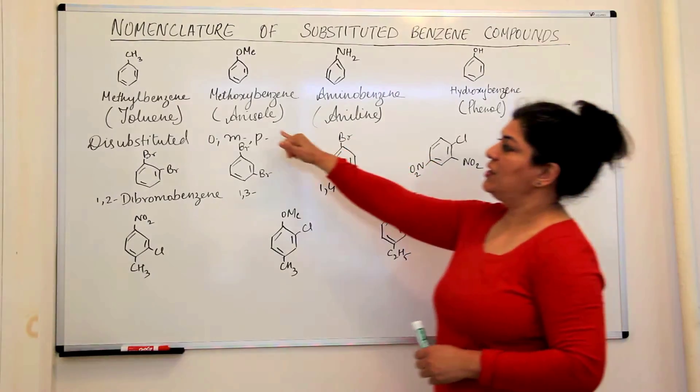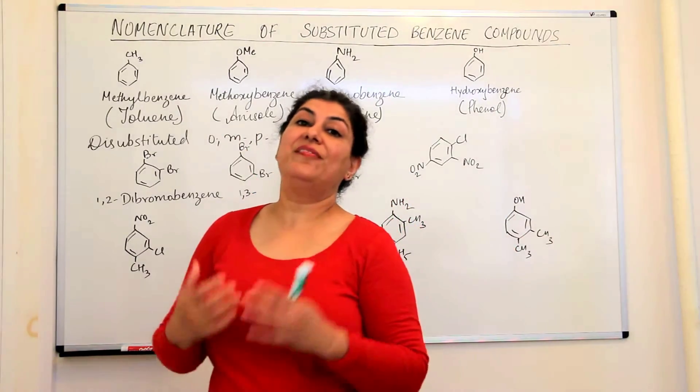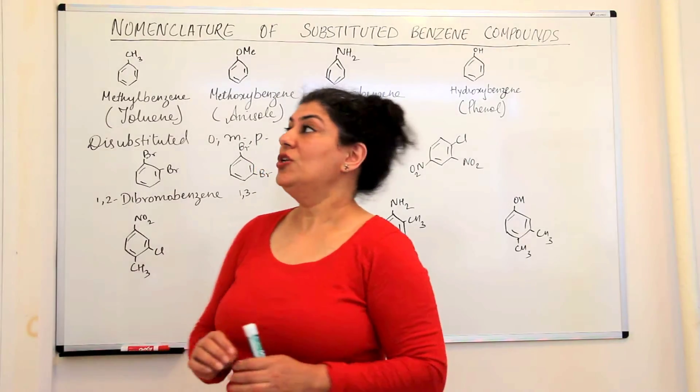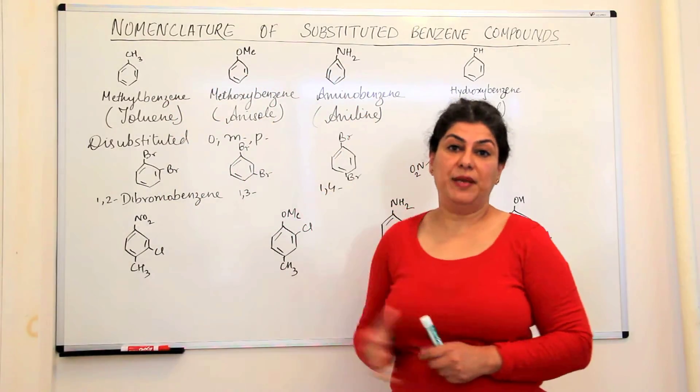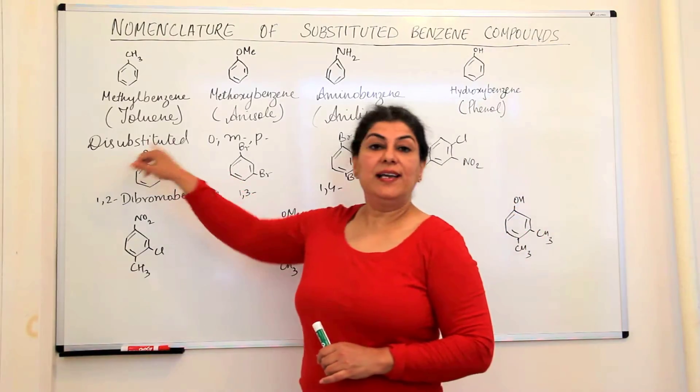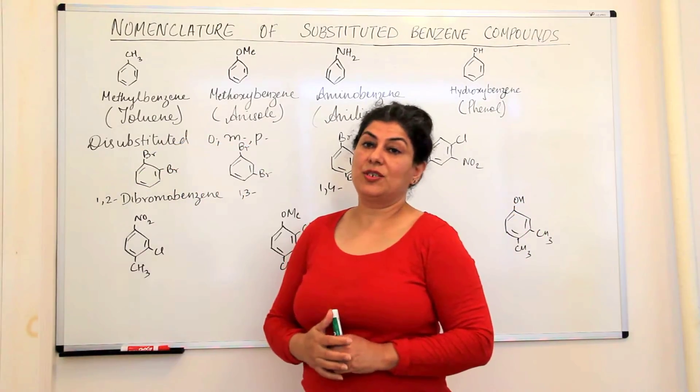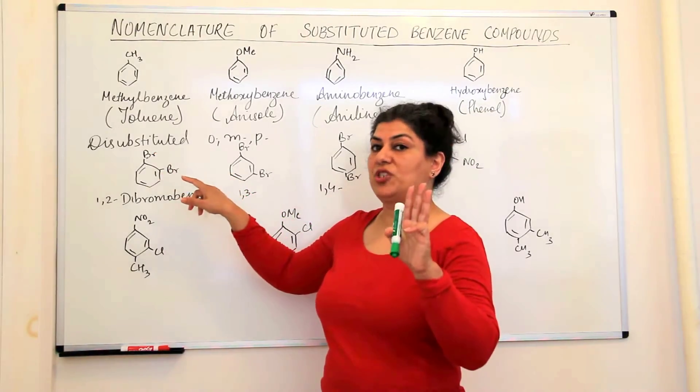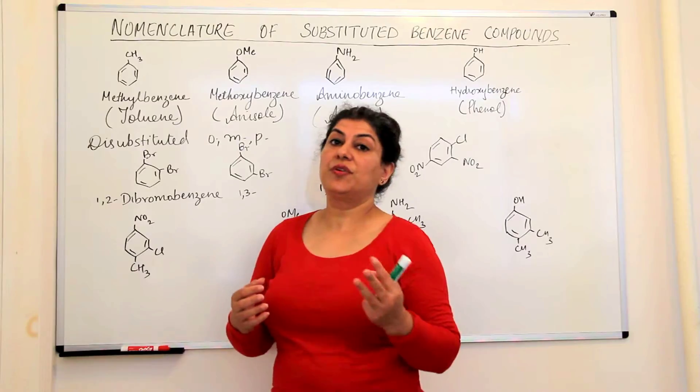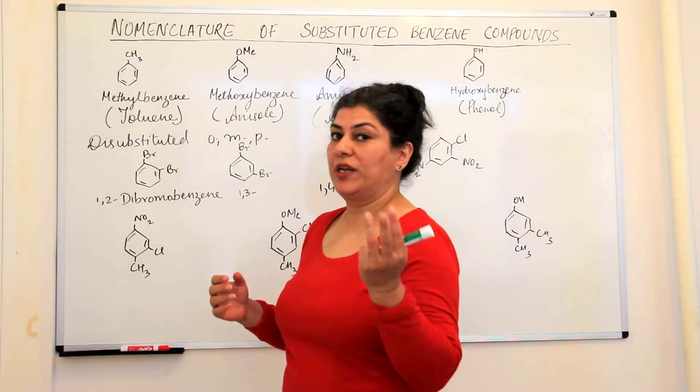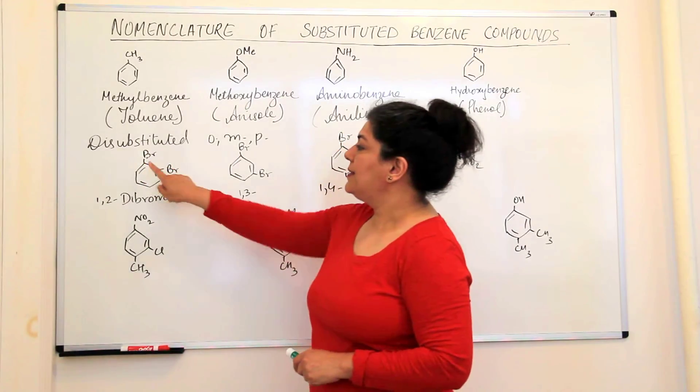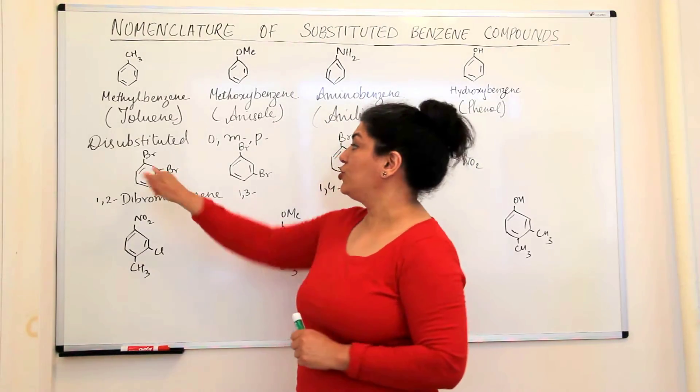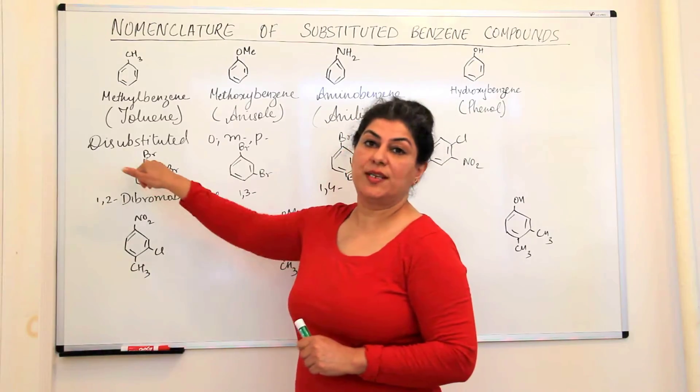The reason I have written these four are because these are very commonly used in the IUPAC nomenclature too. So, these were mono-substituted benzene compounds, a few of them. For di-substituted benzene compounds, there are only three possibilities for di-substituted benzene compounds, that is, three possible locant pairs.